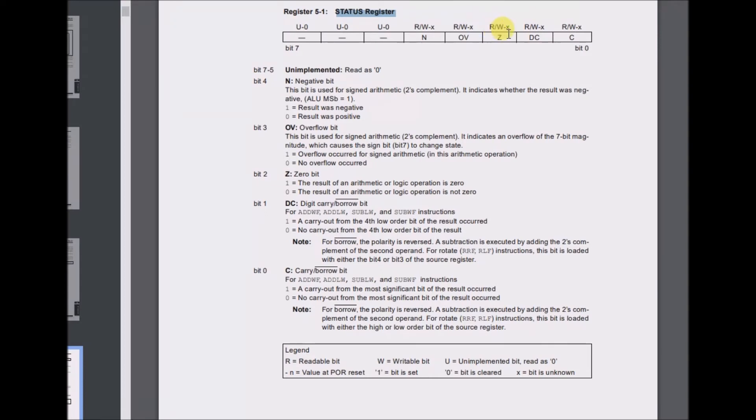Bit 1, digit carry/borrow bit. For add WF, add LW, sub LW, or sub WF instructions, 1 equals a carry-out from the 4th low-order bit of the result occurred. 0 equals no carry-out from the 4th low-order bit. Note: for borrow, the polarity is reversed. A subtraction is executed by adding the 2's complement of the second operand.